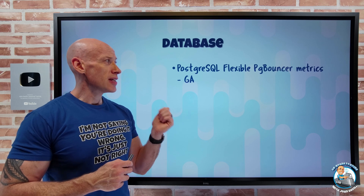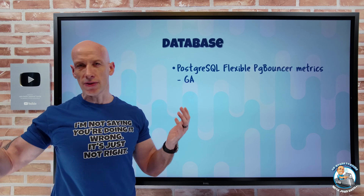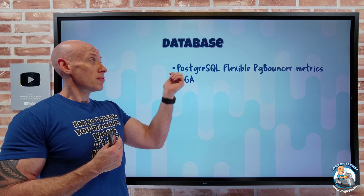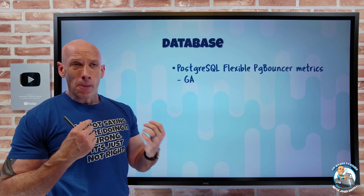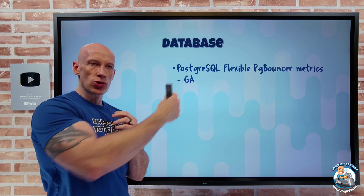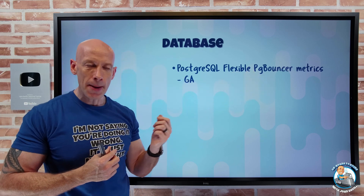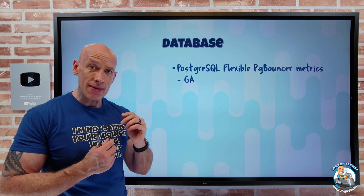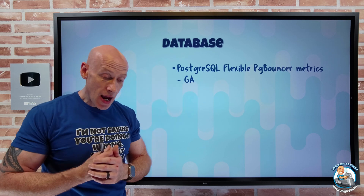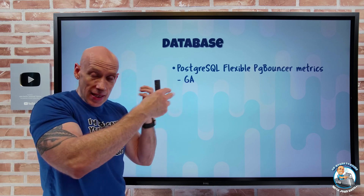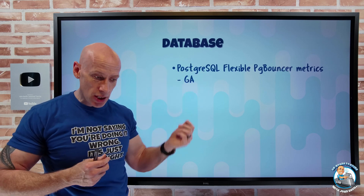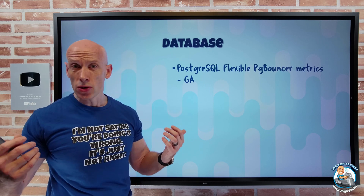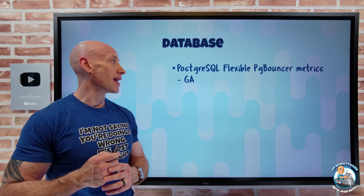On the database side, for PostgreSQL Flexible, PG Bouncer now has some metrics available. Remember, the whole point of PG Bouncer is it's a connection pool. PostgreSQL Flexible accepts a certain number of connections — rather than having clients connect directly to the PostgreSQL database, they connect to the connection broker, which handles the actual connections to the database. With these metrics, I can now see the number of active client connections, waiting client connections (when no connection is available), active server connections to the server, idle server connections, total number of pooled connections, and number of connection pools. So I get better insight into what PG Bouncer is actually doing.